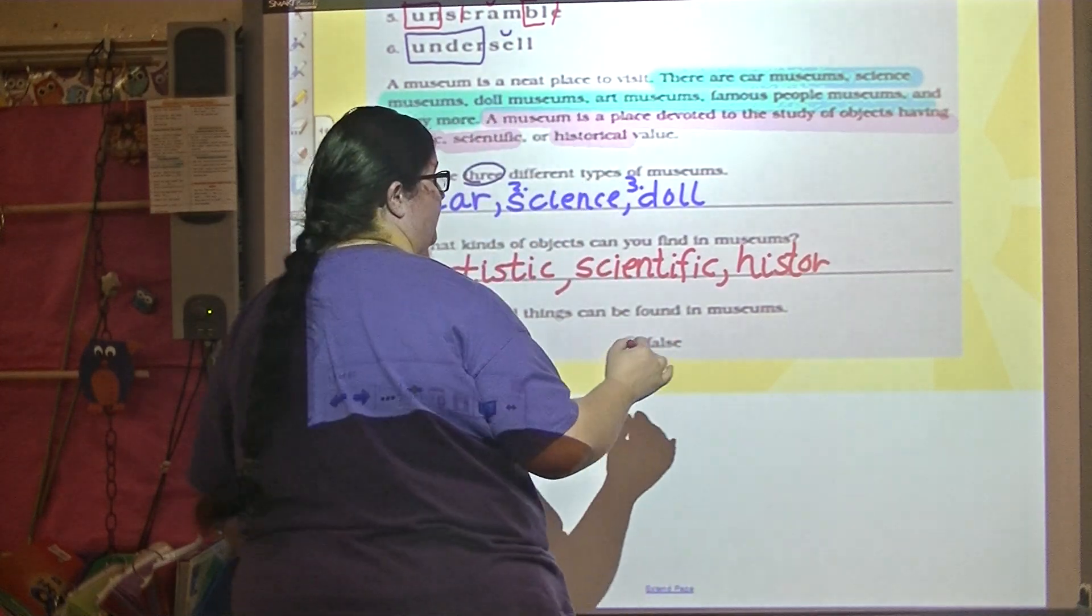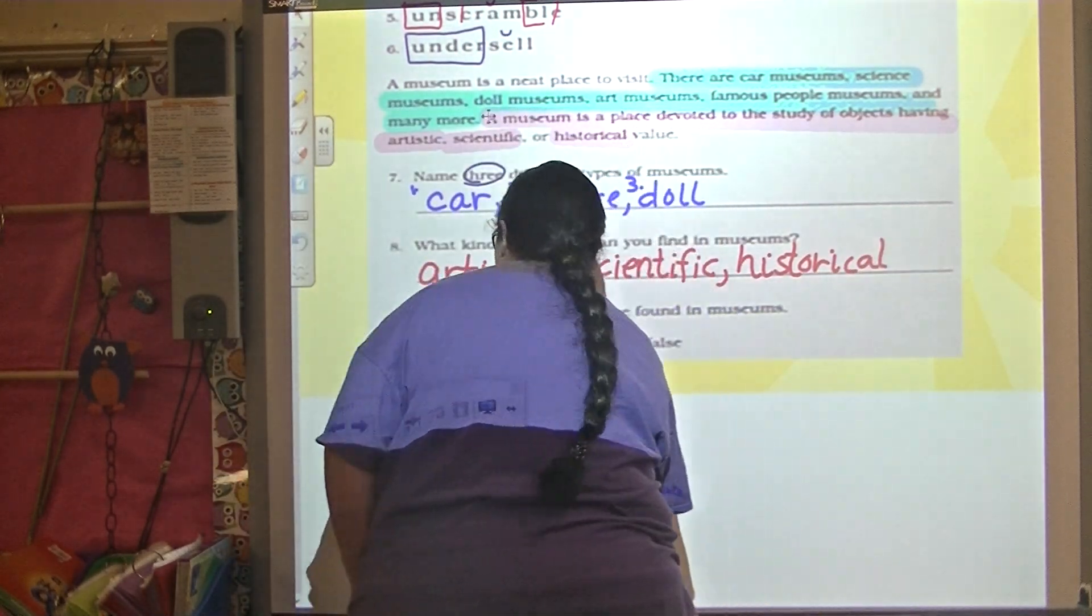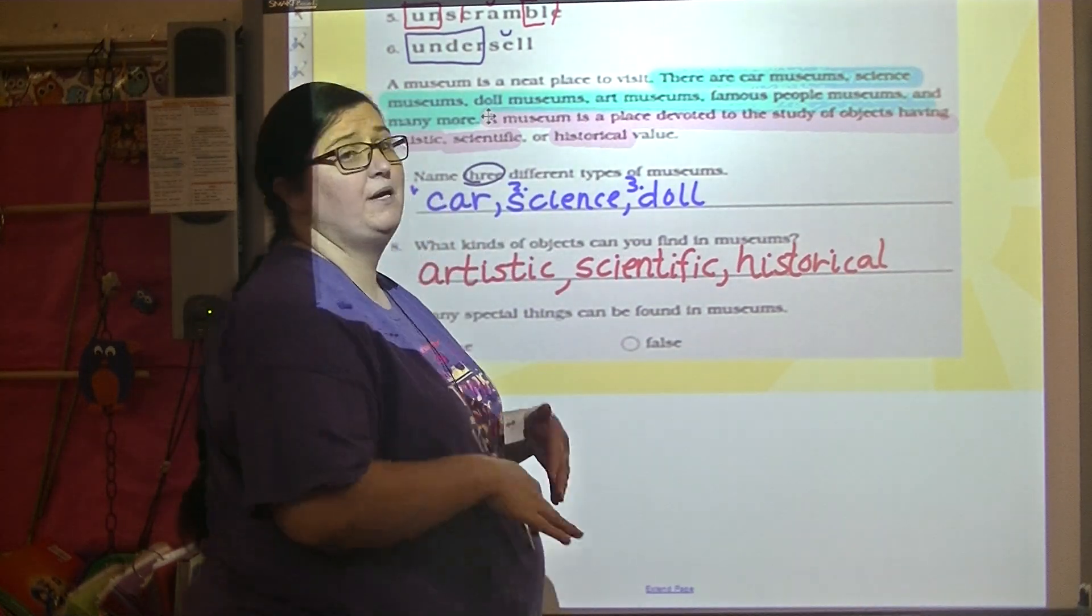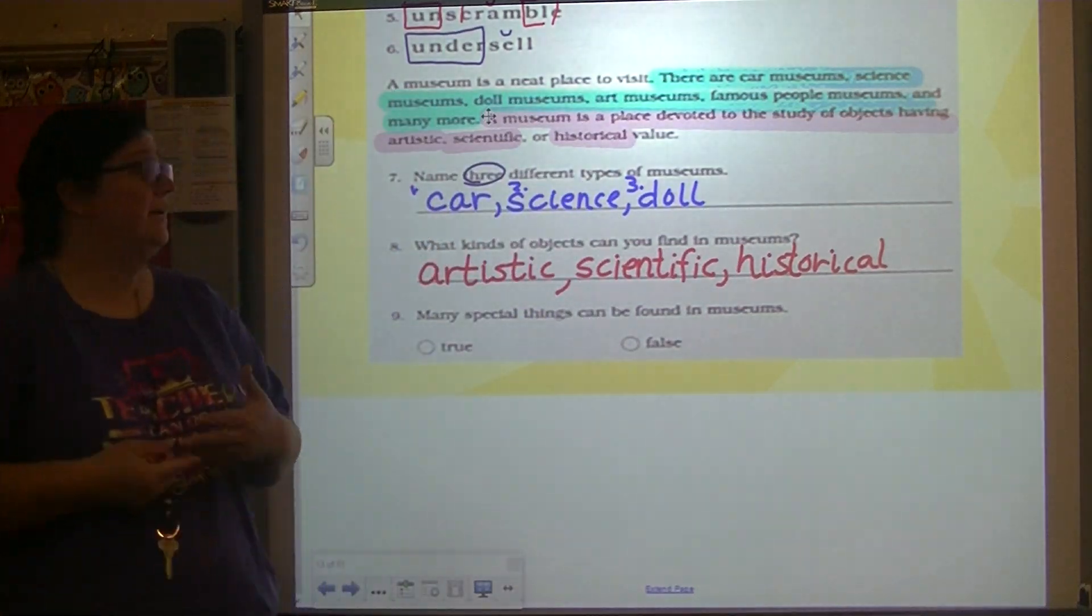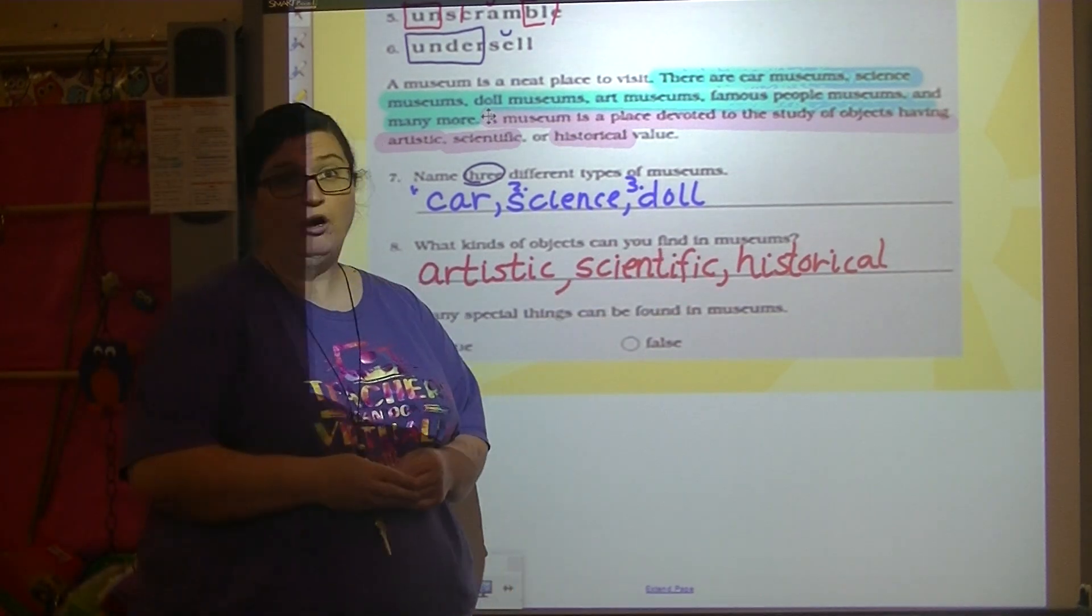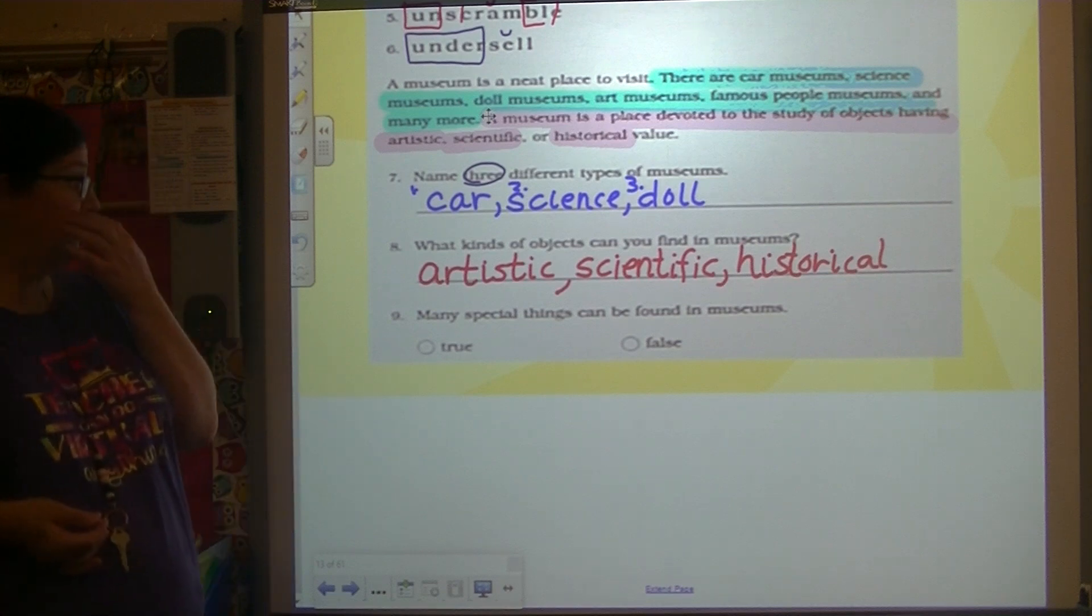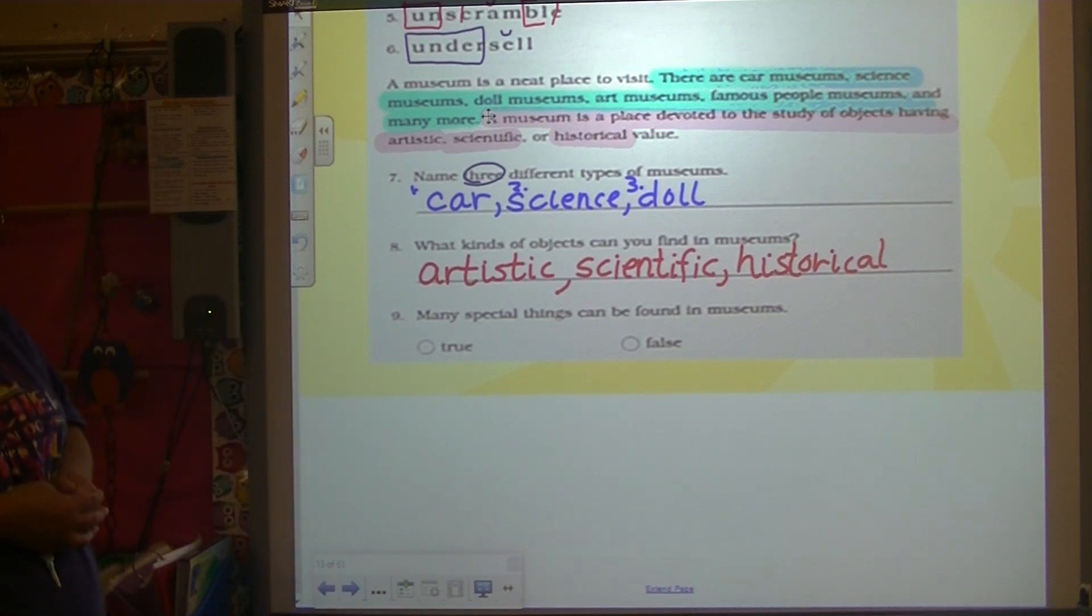So it may be like Ms. Spires was talking about earlier, like dinosaur bones would be scientific. Artistic may be a painting or sculpture. Historical may be something from a war. So you could find those types of objects.